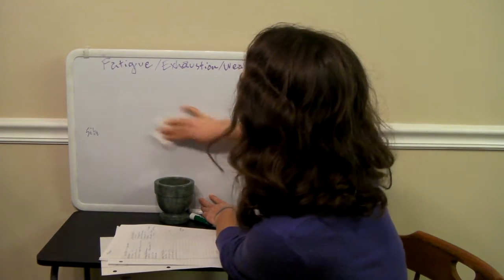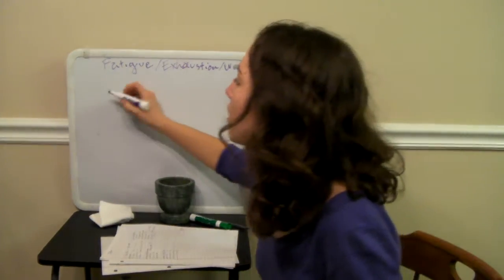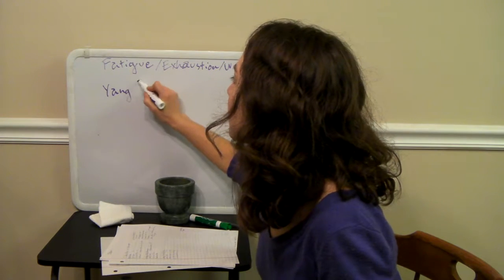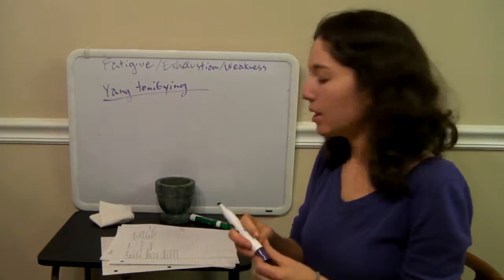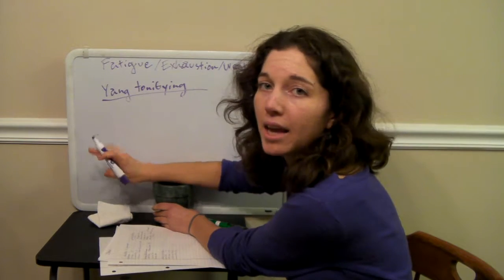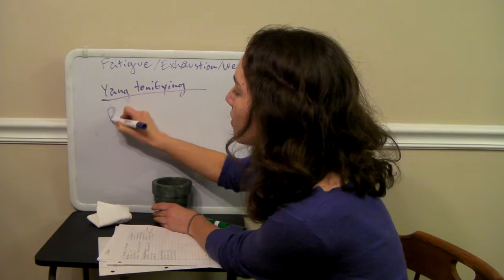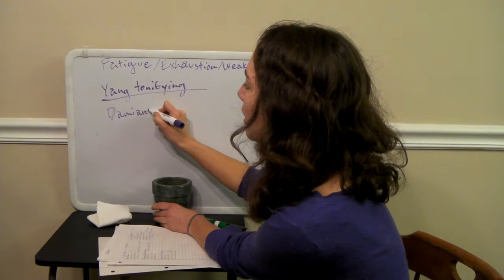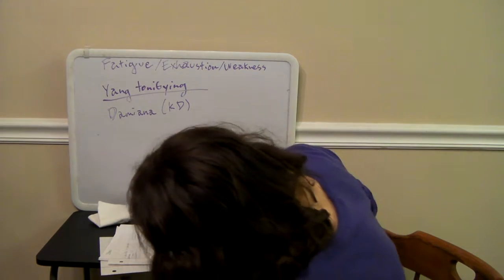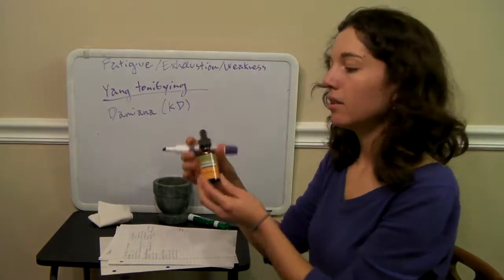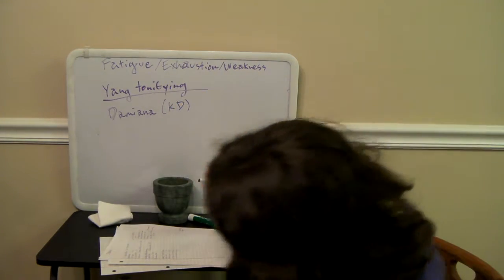So when the fatigue and exhaustion are really apparent, that's when you want to use some yang tonifying herbs. So some common yang tonics that you can get in your supplement store are going to be Damiana. This is a really nice one for the kidney. You can usually find this. I have a nice bottle here. So this is a tincture of Damiana. And you can normally find this in some kind of supplement store.